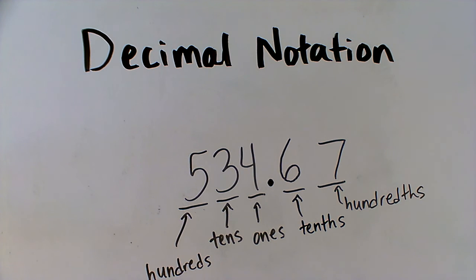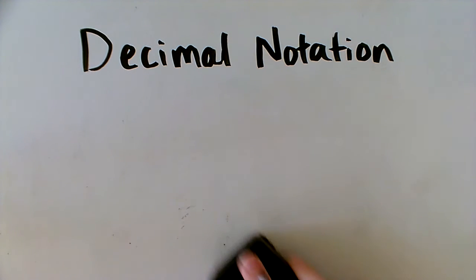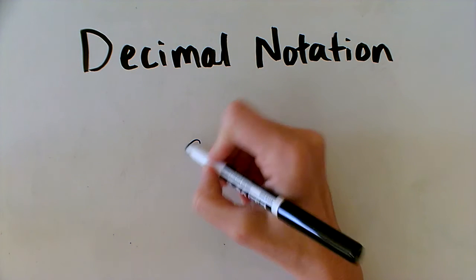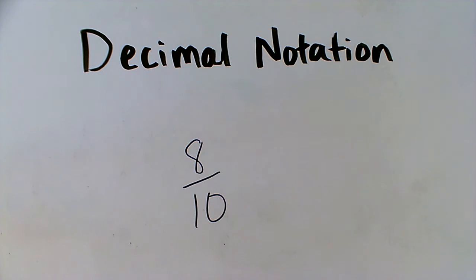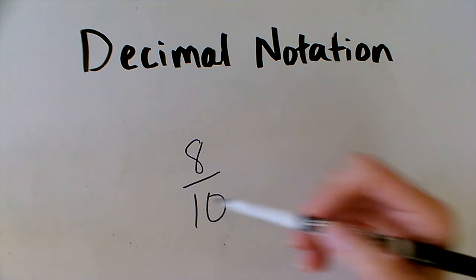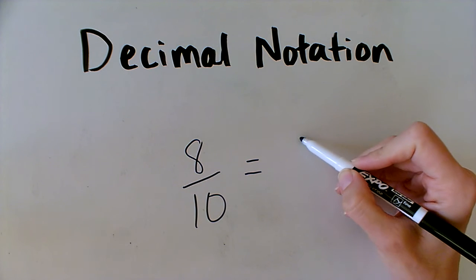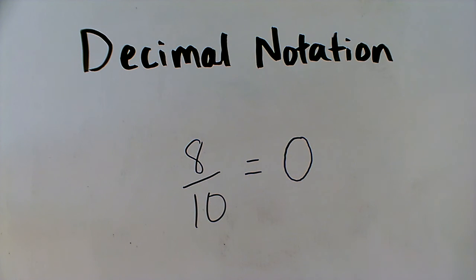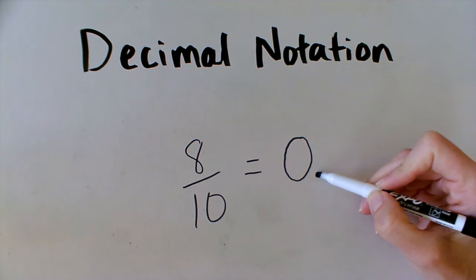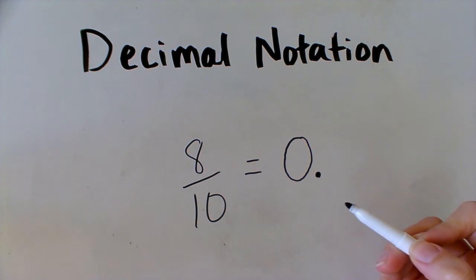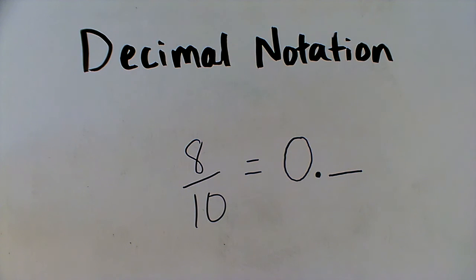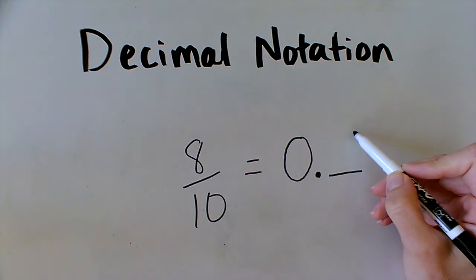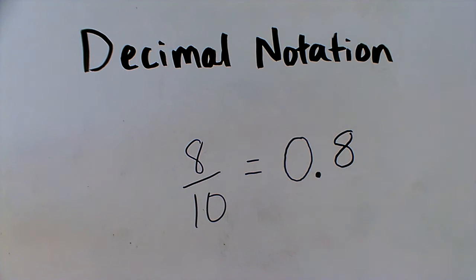So if I want to write a fraction as a decimal, I just have to make sure I put the digit in the right place. Let's look at a few examples. We'll start with 8 tenths. If I want to write the fraction 8 tenths as a decimal, I need to put the 8 in the tenths place. I don't have a whole number — it's not a mixed number — so I'm not going to have anything in the ones place. So I have zero. The decimal says 'and,' so I would say 'zero and...' and then the tenths place comes right after the decimal. So I put the 8 in the tenths place. This says eight tenths, or zero and eight tenths, in decimal notation.